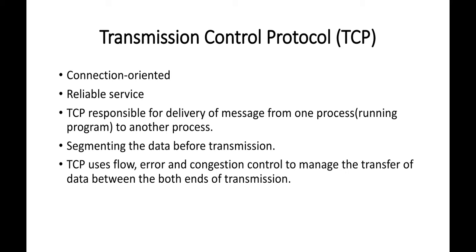The first transport layer protocol is TCP — Transmission Control Protocol. TCP is a connection-oriented protocol. In contrast, the IP protocol in the network layer is a connectionless and unreliable protocol: connectionless means no connection is established before transmitting data, and unreliable means packets can go to different destinations with no acknowledgment. That is why IP is paired with TCP, which is why we call TCP/IP the backbone of the internet.